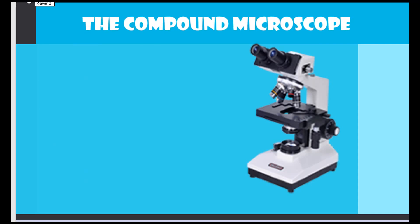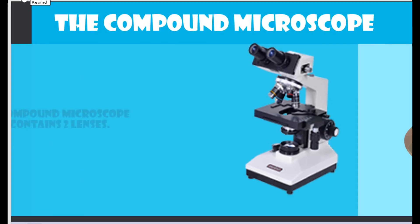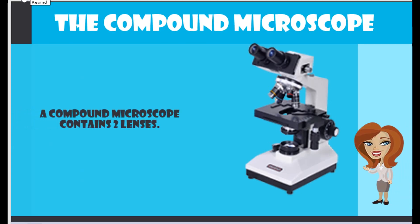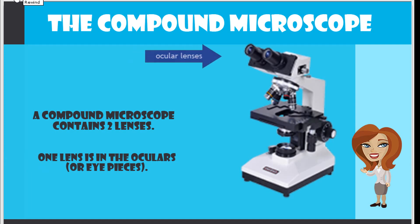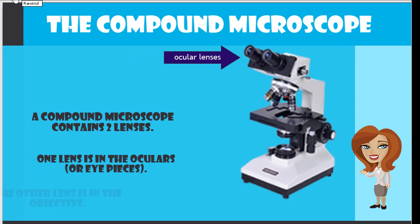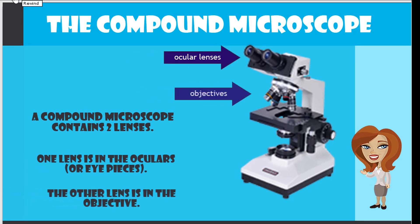The compound microscope contains two lenses. One lens is in the oculars, and the other lens is in the objective.